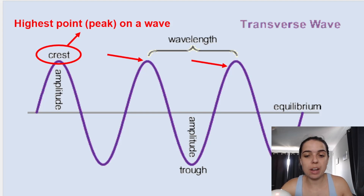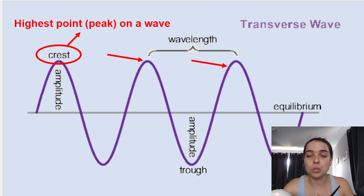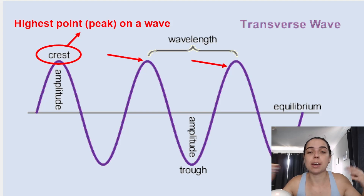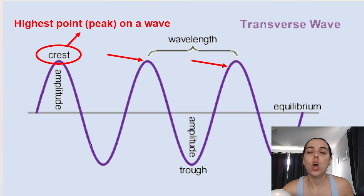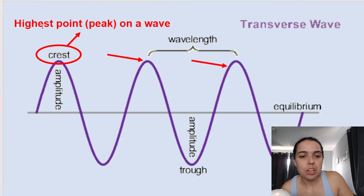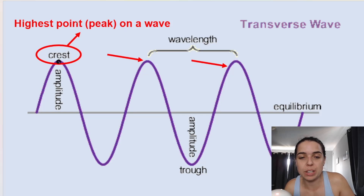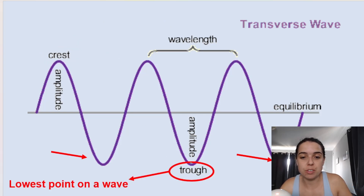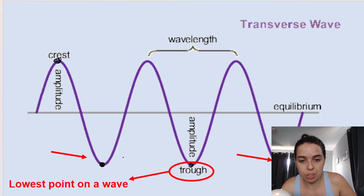It's very important that you understand the different parts, properties, and variables associated with a transverse wave. You will be expected to calculate things such as wavelength, amplitude, period, and frequency. You need to be able to identify the crest, which is the highest point or peak of a wave, and the trough, which is the lowest point on a wave.